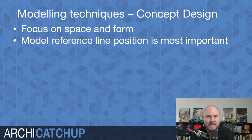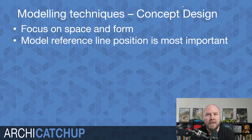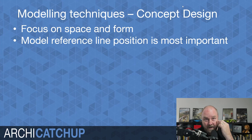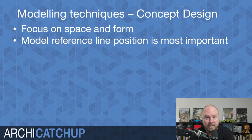The focus — going back to accurate modeling — is making sure our model reference line position is where it needs to be. This comes back to model quality assurance. When you're modeling, take the time to get your model reference line in the right spot. You don't want to find yourself going through design development having to take elements you've put in place and readjust them because you were a little lazy with your model reference lines.